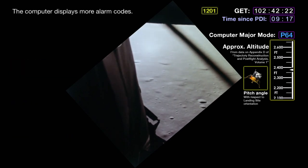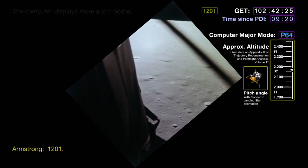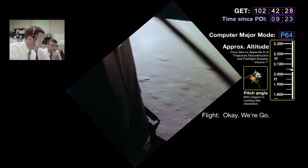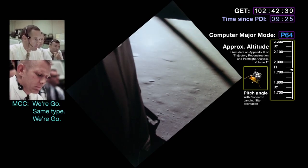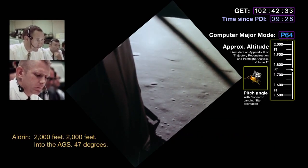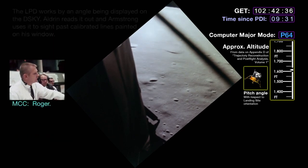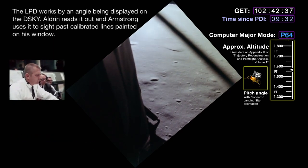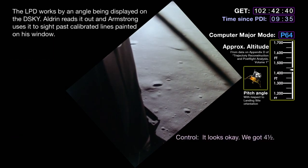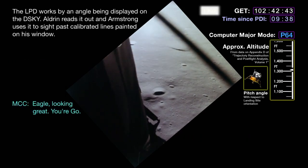12-01 alarm called by Eagle at approximately 3,000 feet. Houston acknowledges — same type as before, we're go. 2,000 feet. Eagle's attitude at 47 degrees noted. Fuel margin approximately four and a half percent — looks okay. Eagle confirmed looking great, still go. Altitude update: 1,600 feet.